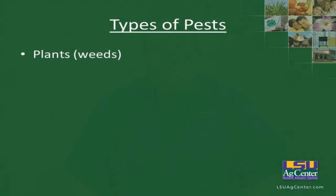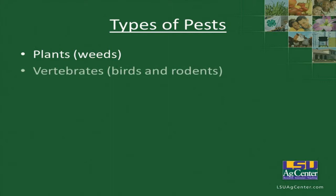Different types of pests include weeds, which we've probably heard about from our weed scientist, and vertebrates such as birds and rodents. We do lose a lot of crops to birds early season.